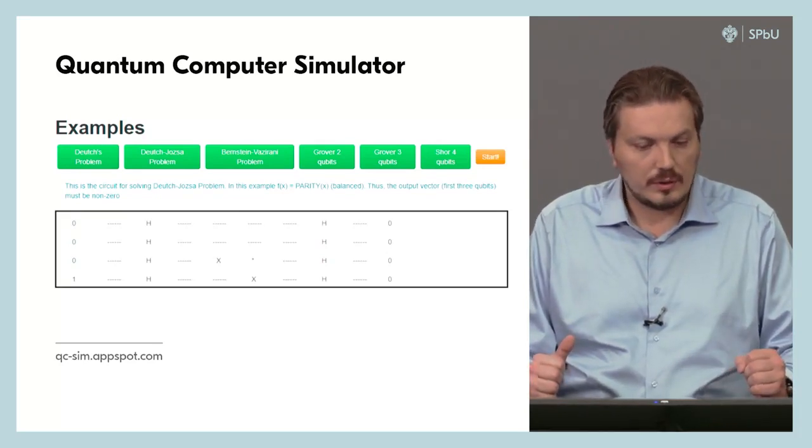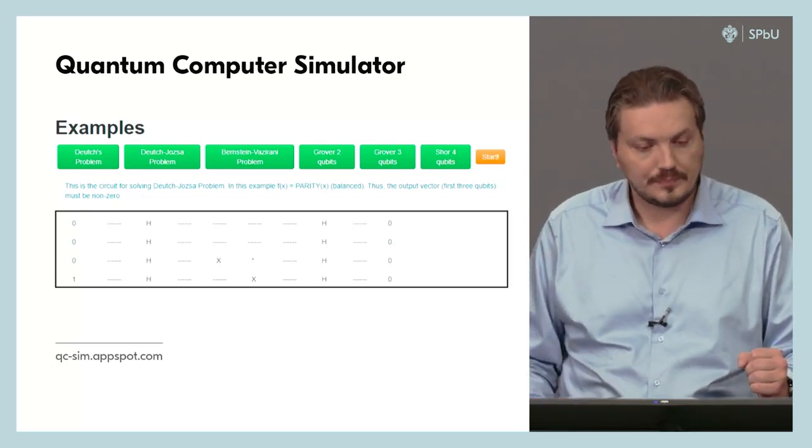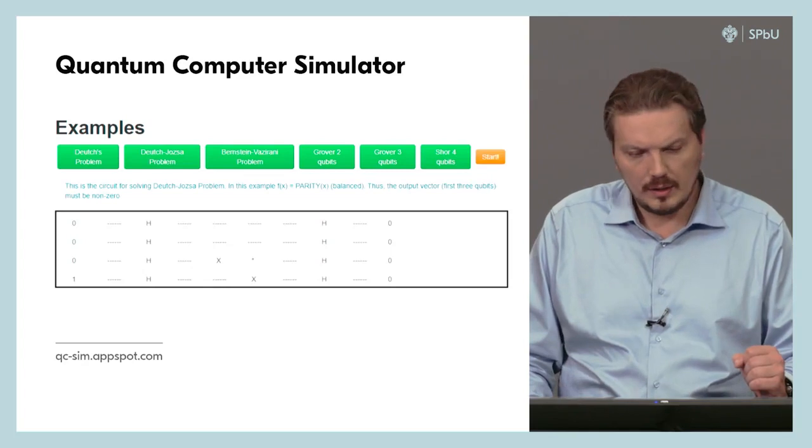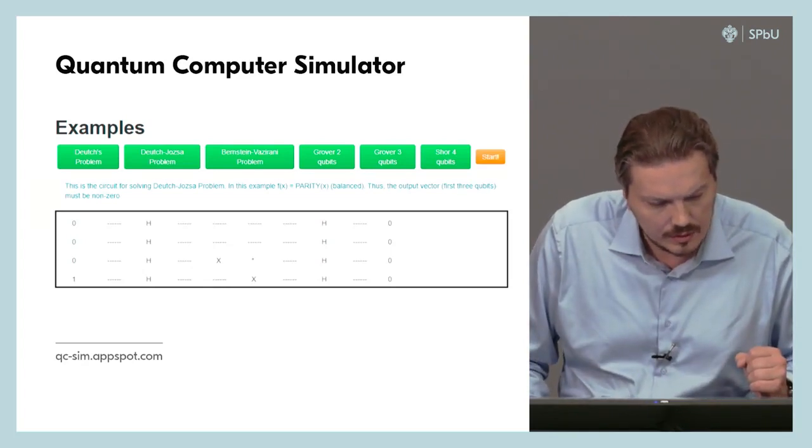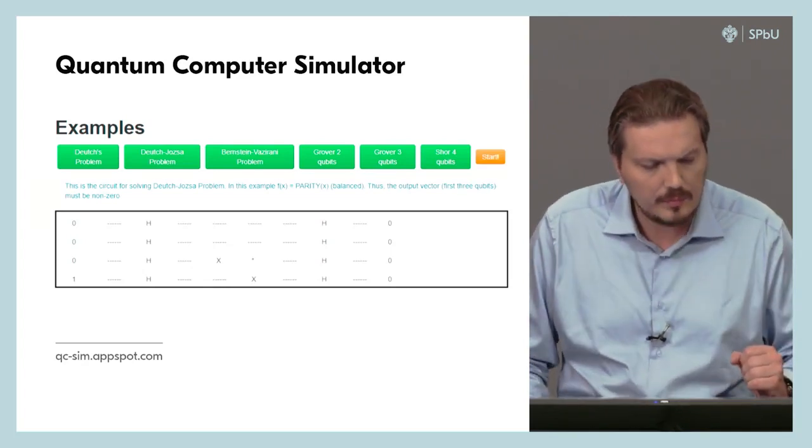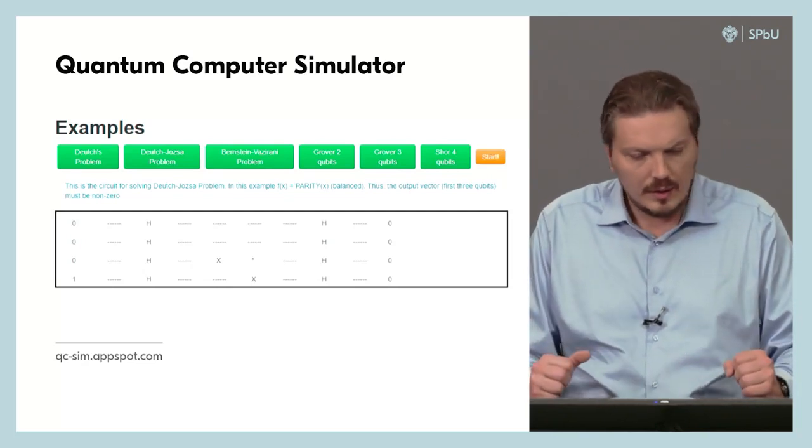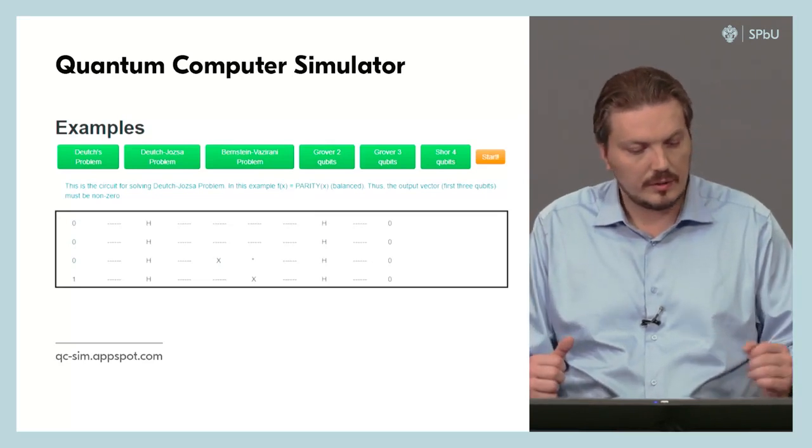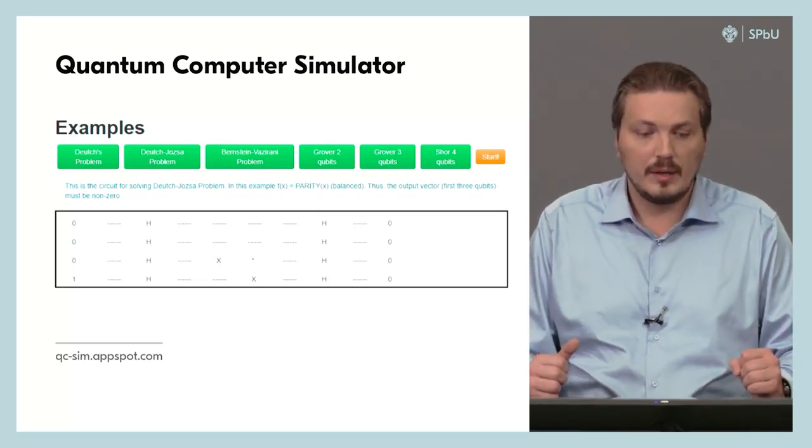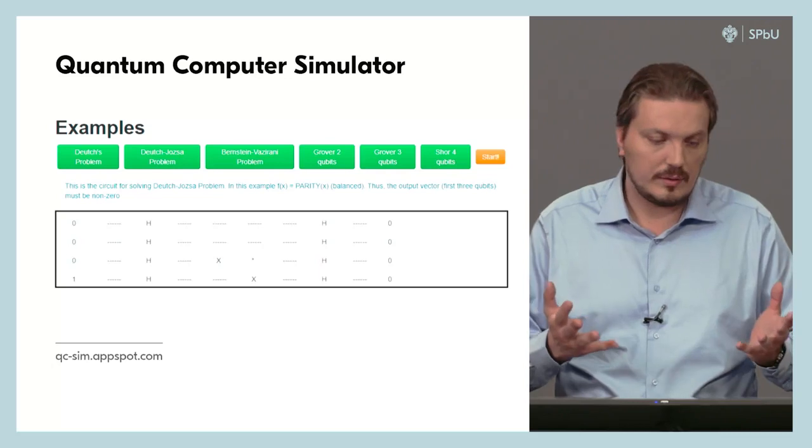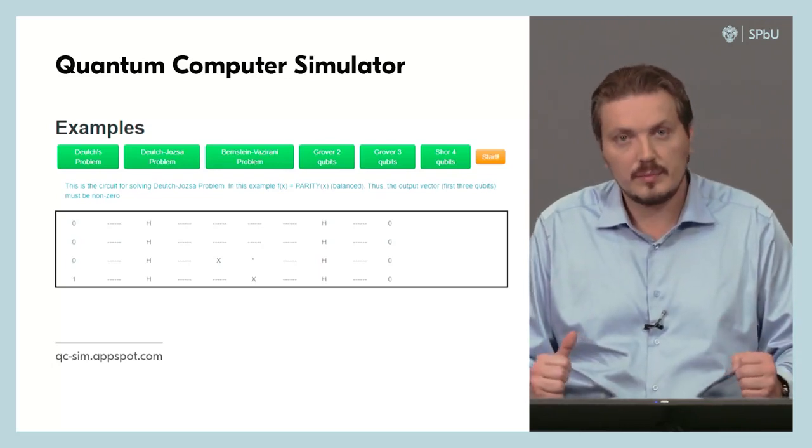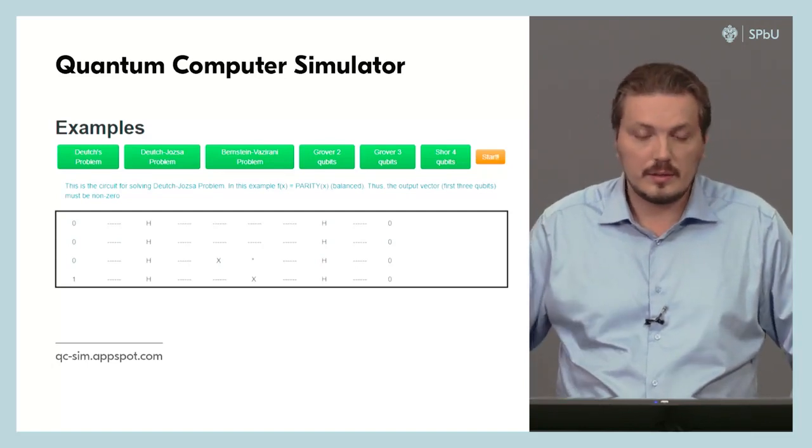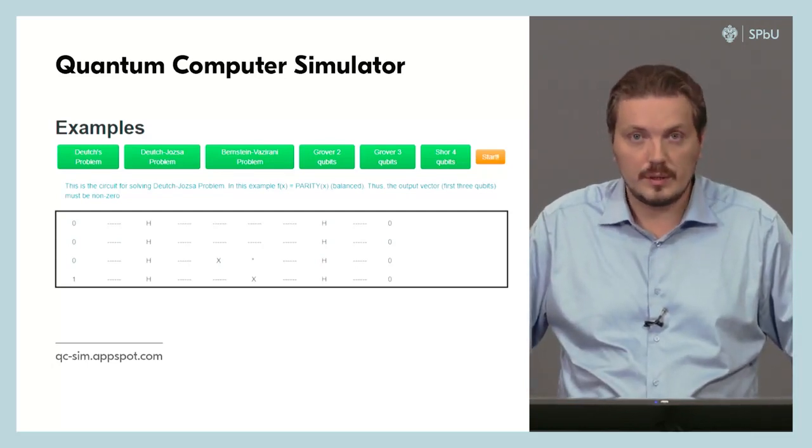Screenshot of the simulator of quantum computer implemented by my student Yuri Konoplov. And here I believe it is for the parity function. And you can find this simulator on the link. The simulator allows up to 24 qubits.